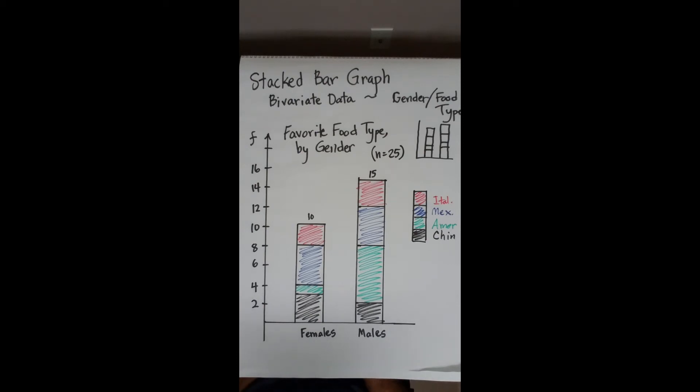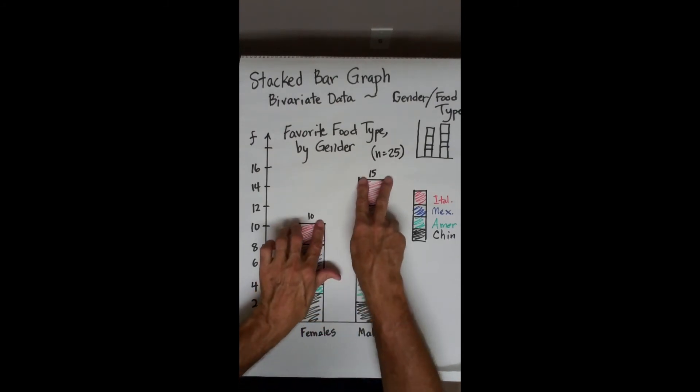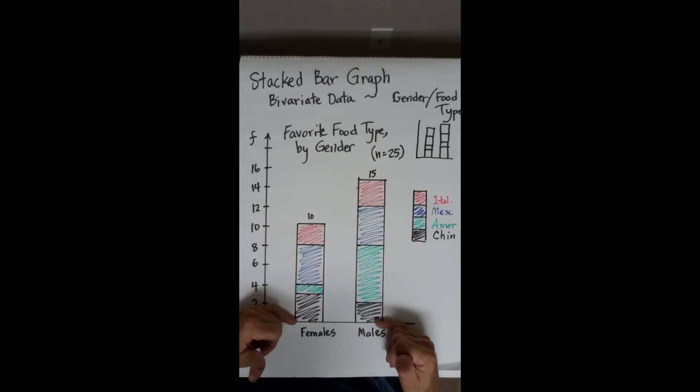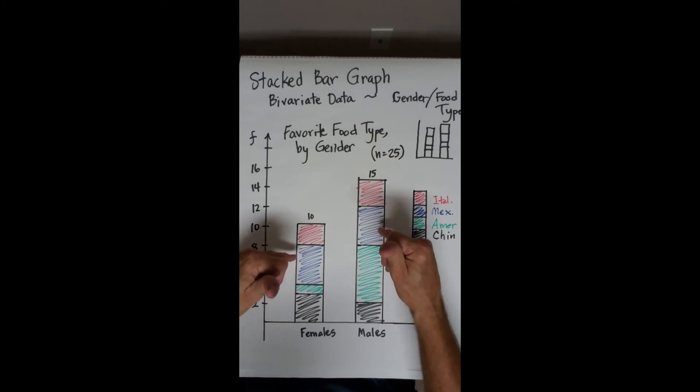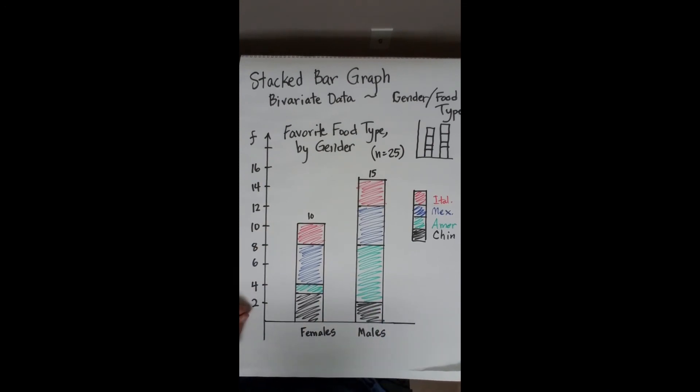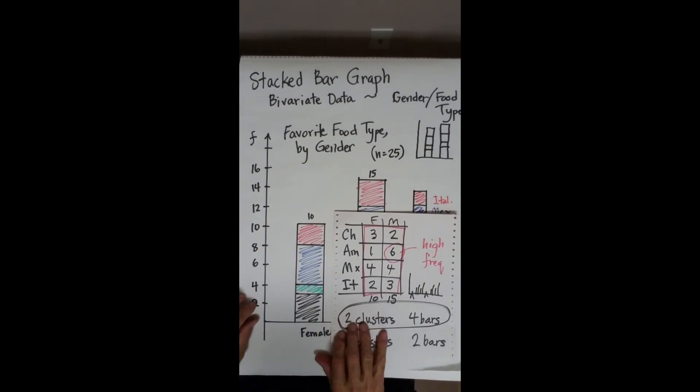This is your stacked bar graph. A little bit more challenging to make because you should start out by drawing the bar the full length based upon your sample sizes of females and males and then carefully, very carefully chop it up into pieces making the height of each separate bar equal to its frequency. You can double check that.